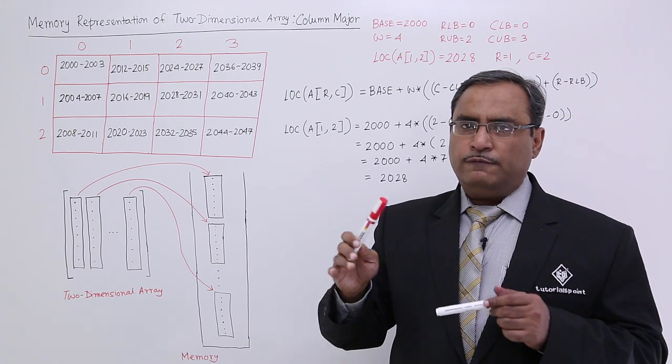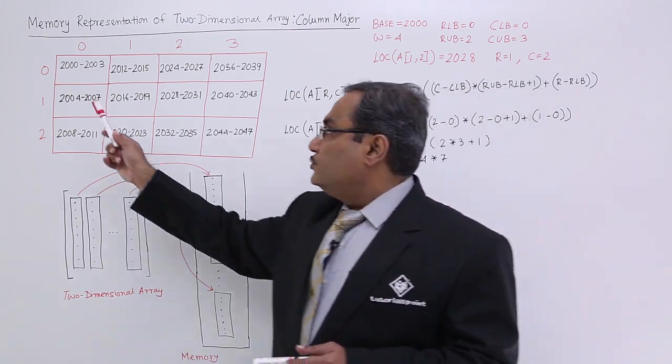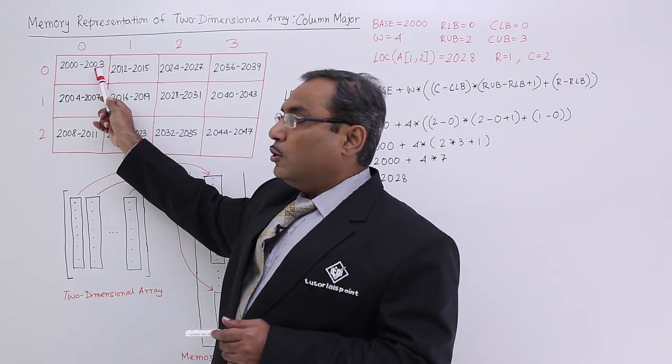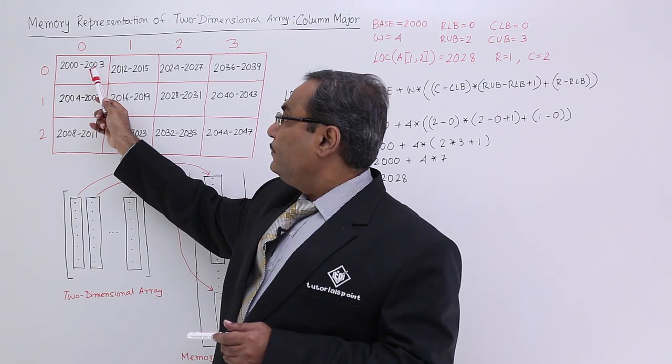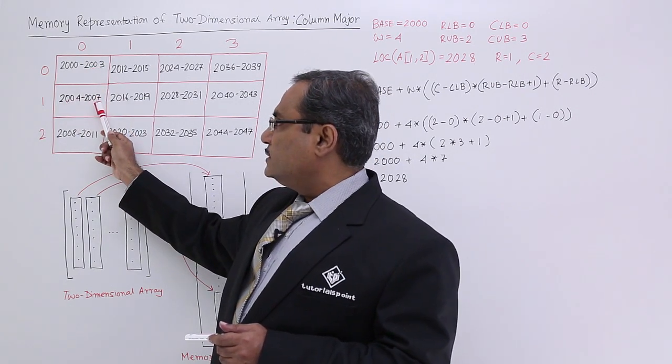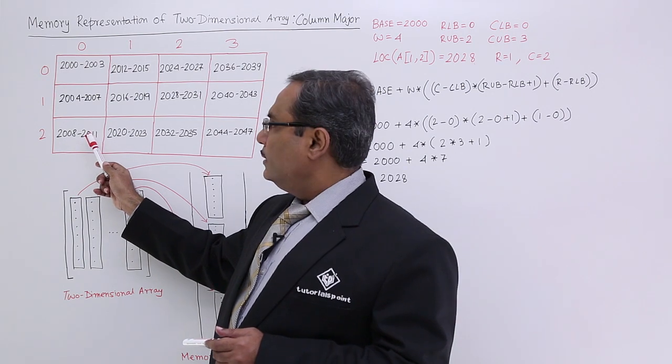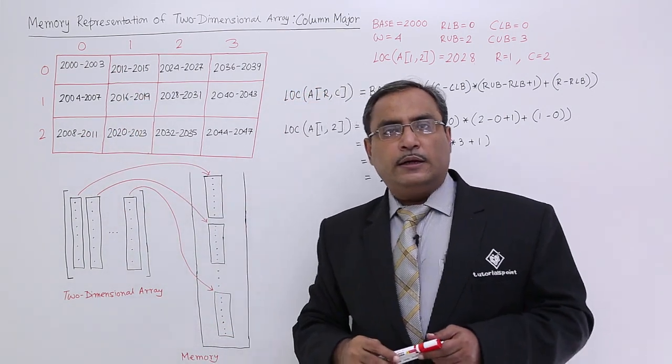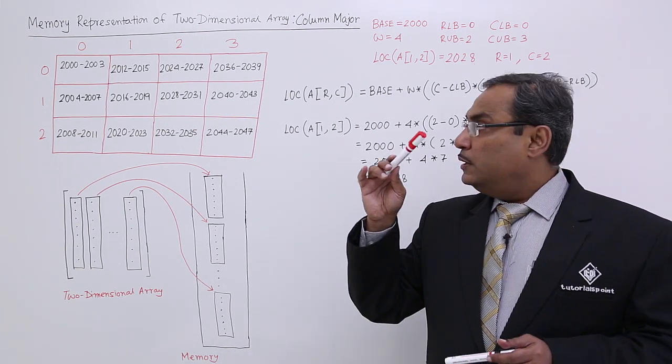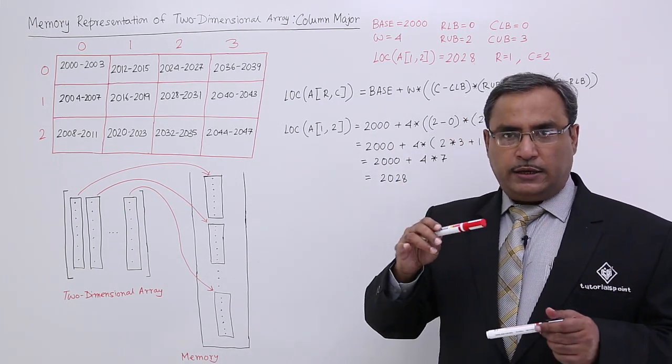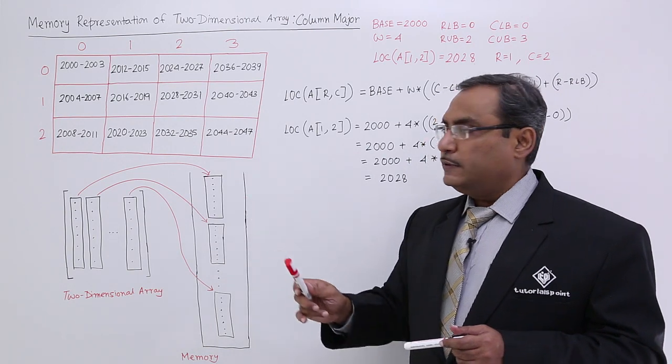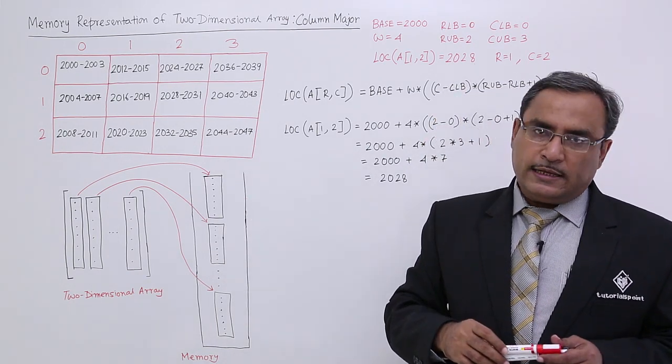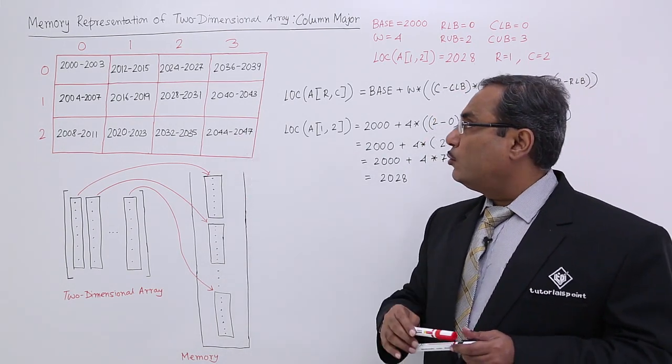Four locations can contain four bytes of information. So it will be mapped in this way onto the main memory. Then 2004 to 2007, then 2008 to 2011, then 2012 to 2015 in this way. The memory addresses are getting occupied by the respective two-dimensional array's data.